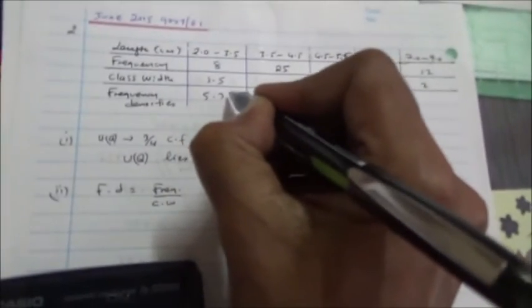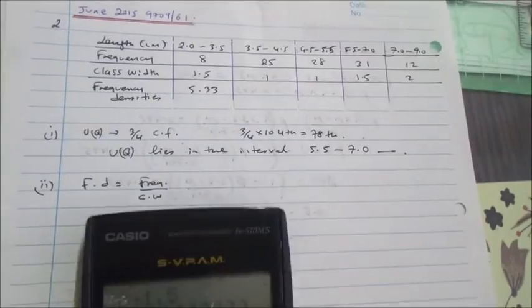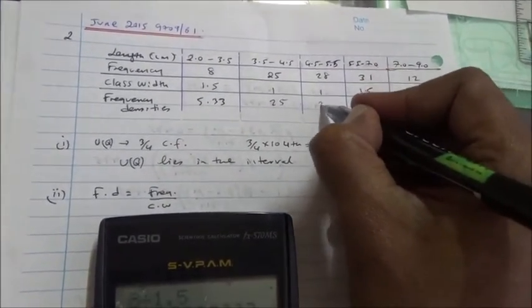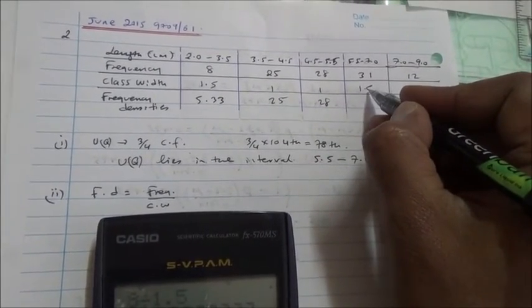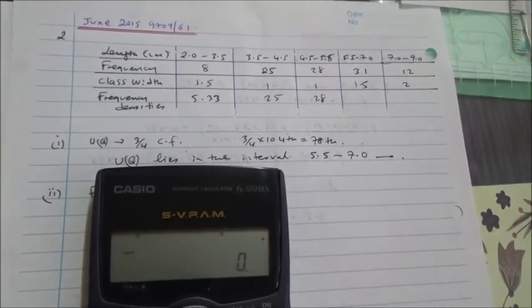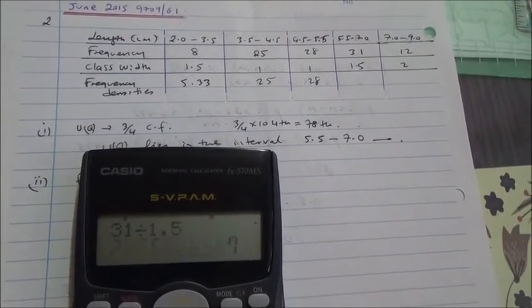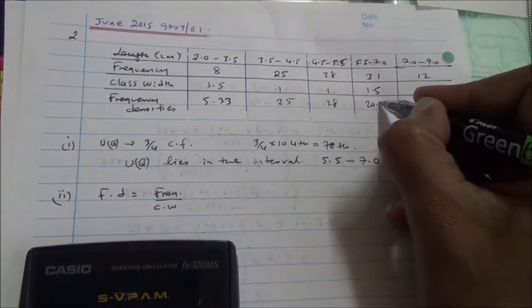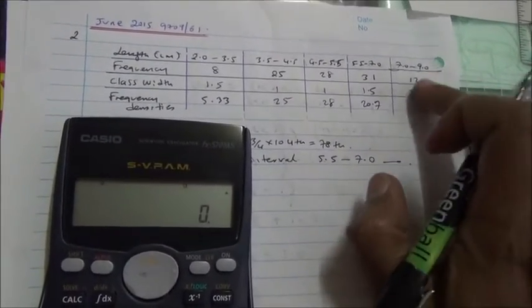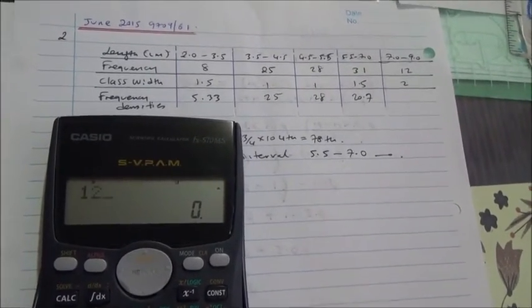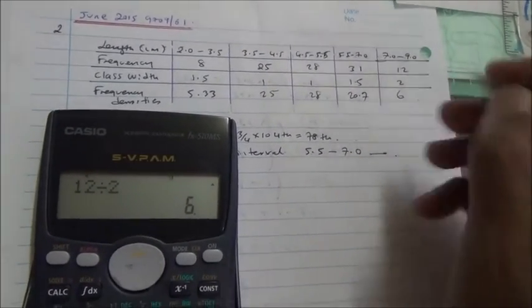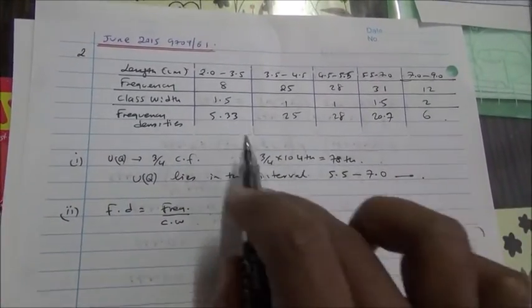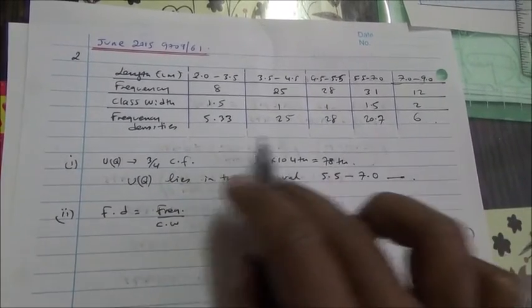8 over 1.5 is going to give you 5.3. And the second one is 25 divided by 1 is 25. Then you have 28 over 1 is 28. You have 31 over 1.5, which is 20.7. And also you have 12 divided by 2, which is 6. Now, these are your frequency densities. So I'm going to draw the graph and come back to show you how it looks like.